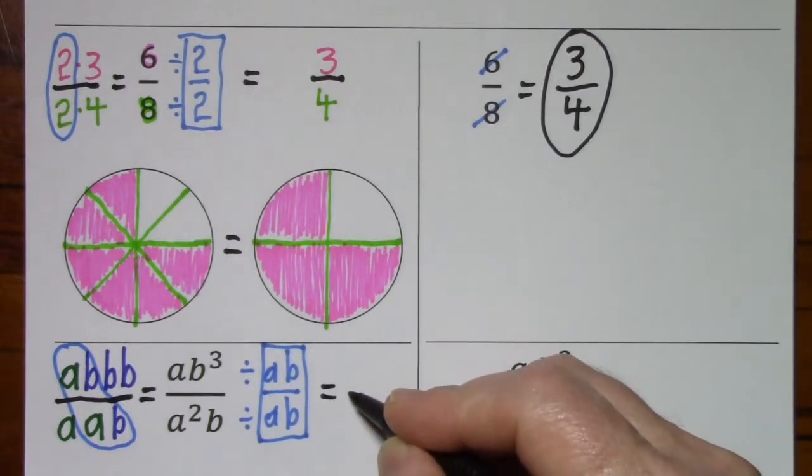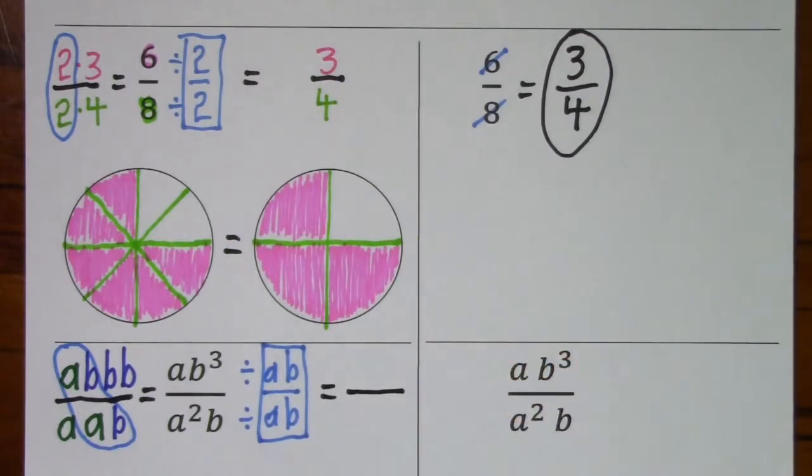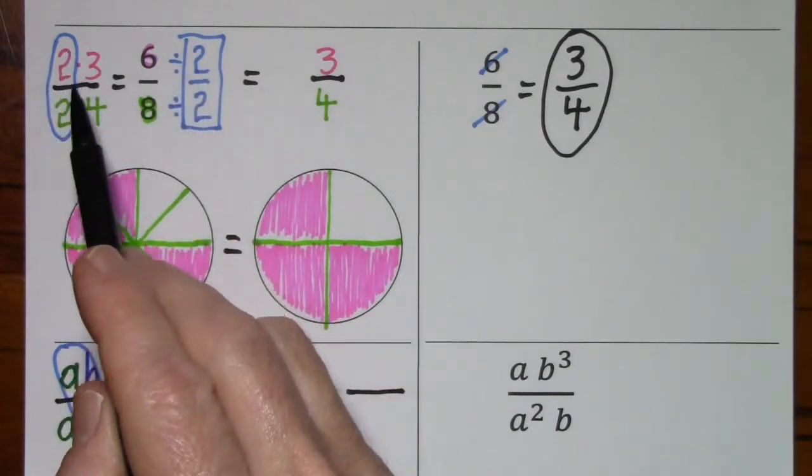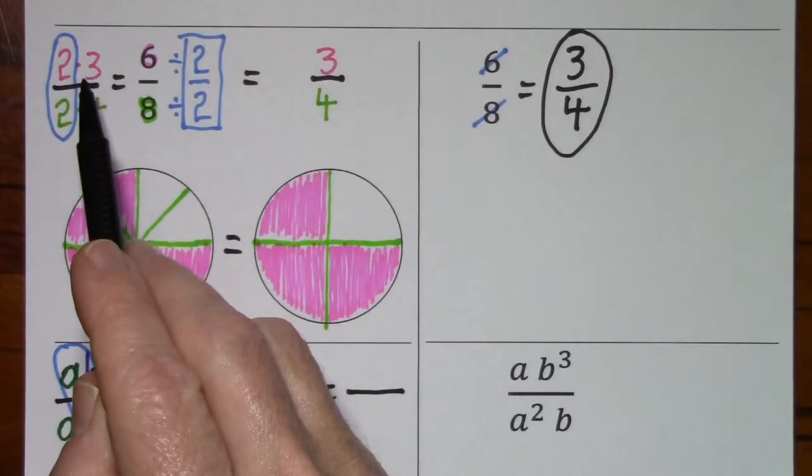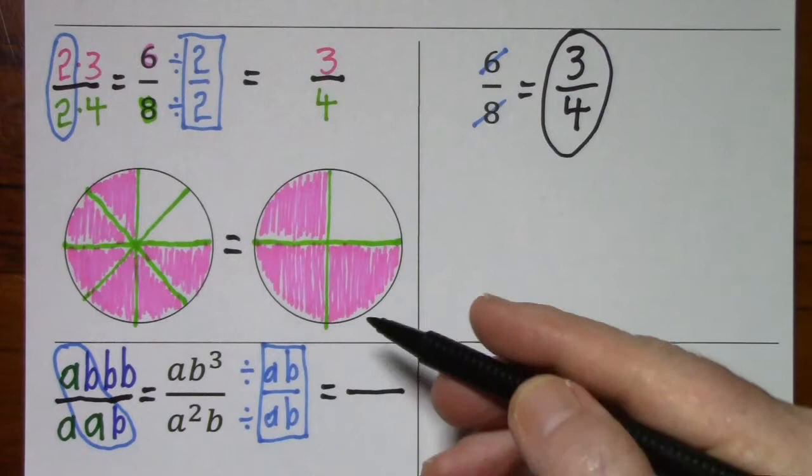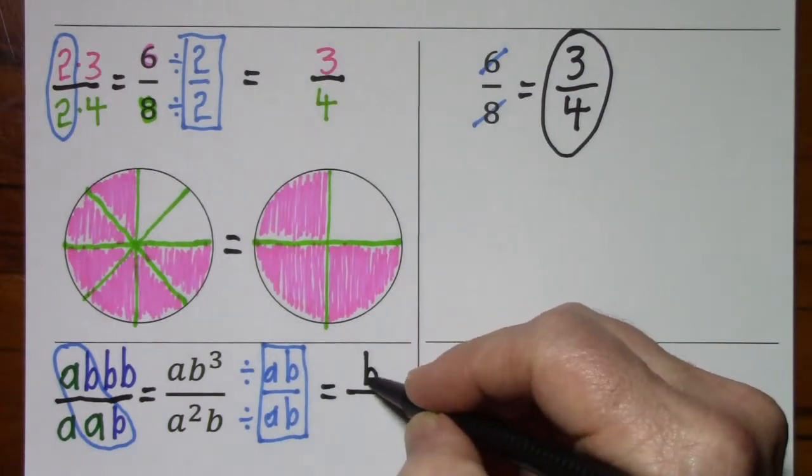Well, what's this going to leave us with? It might be kind of hard to see what's happening here and think about it. But notice when we divided by 2, we canceled that and we were left with 3. Here, when I divide by ab, I'll cancel those and I'll be left with b times b or simply b squared.